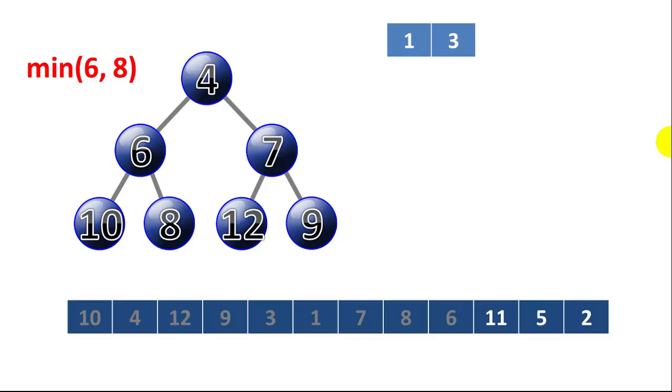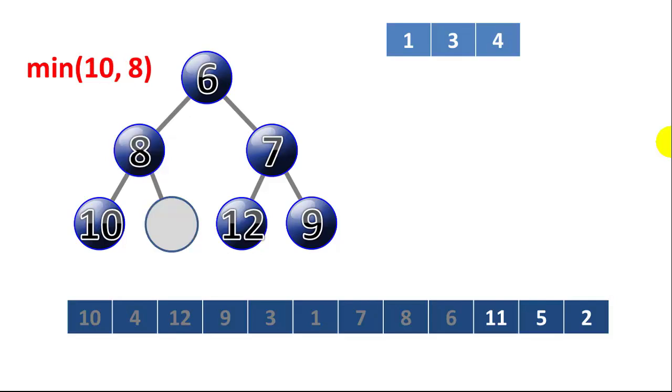So now we have a good heap again. We can pop the top item off the list. Our next winner is 4. We'll compare the 6 and the 7. The 6 is smaller, so it moves into the root node. The 10 and the 8. The 8 is smaller, so it takes the space where the 6 was. We're going to move this 11 into that spot. First thing we do when we move that 11 into the spot, we have to compare 11 to the last item that we added to the output, which is 4. Is 11 smaller than 4? No, so we don't need to worry about that. Now we can compare 11 to 8. 11 is in its proper position. It's not smaller than 8. So we have a good heap again.